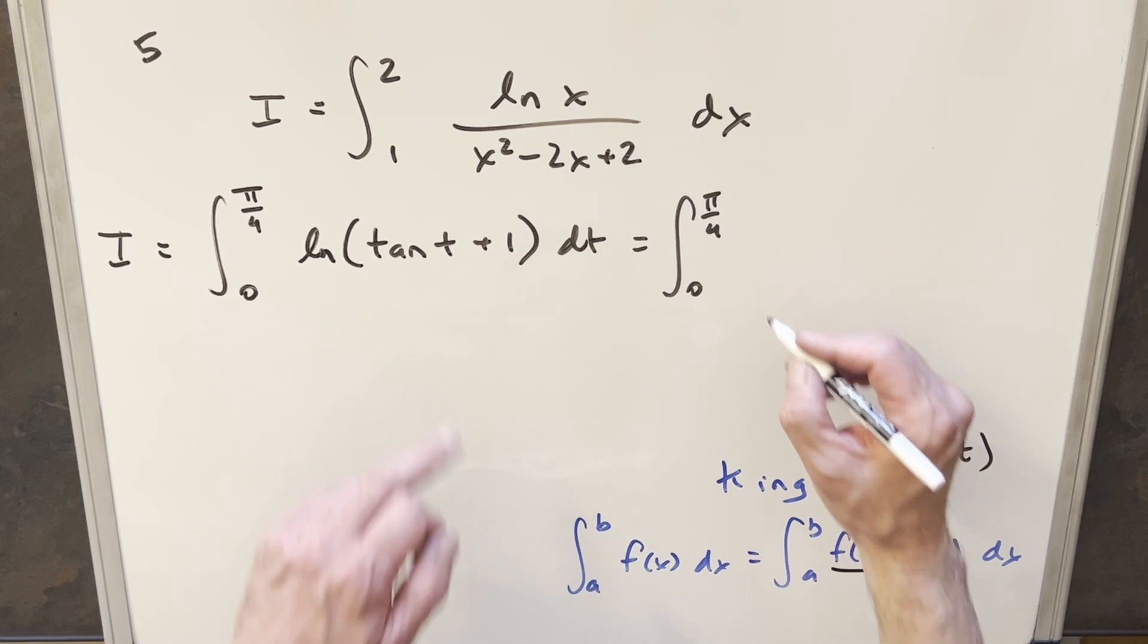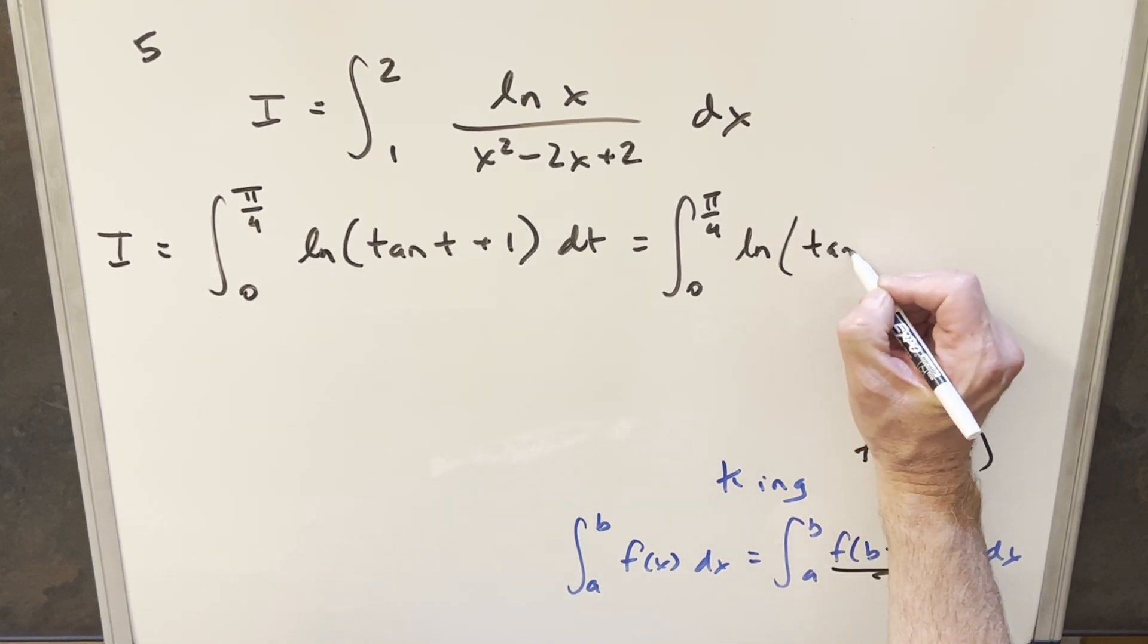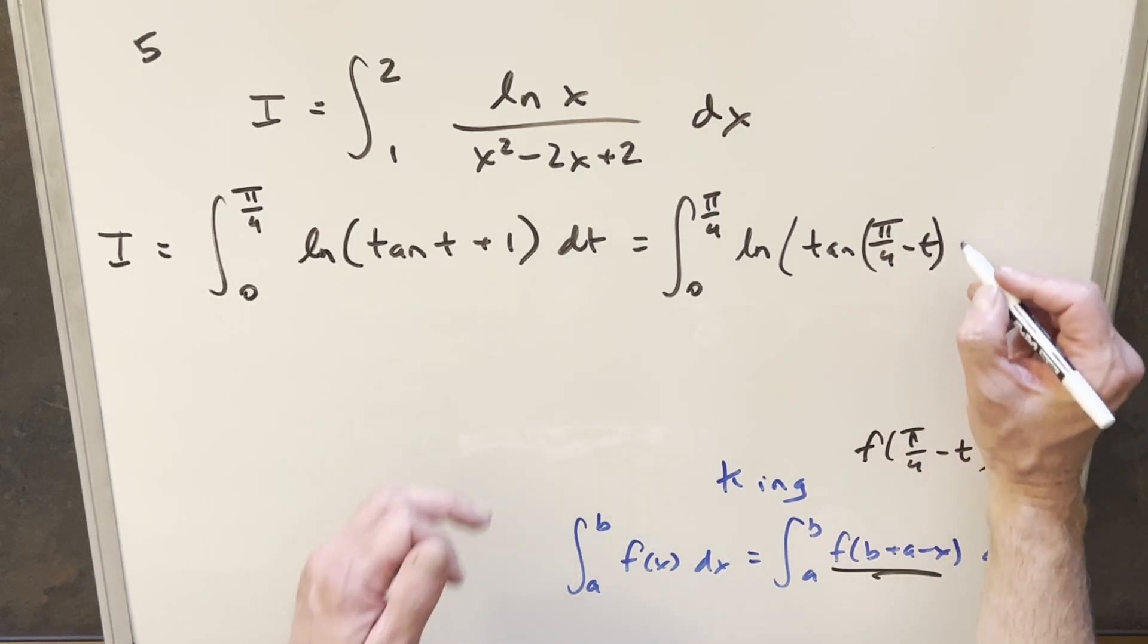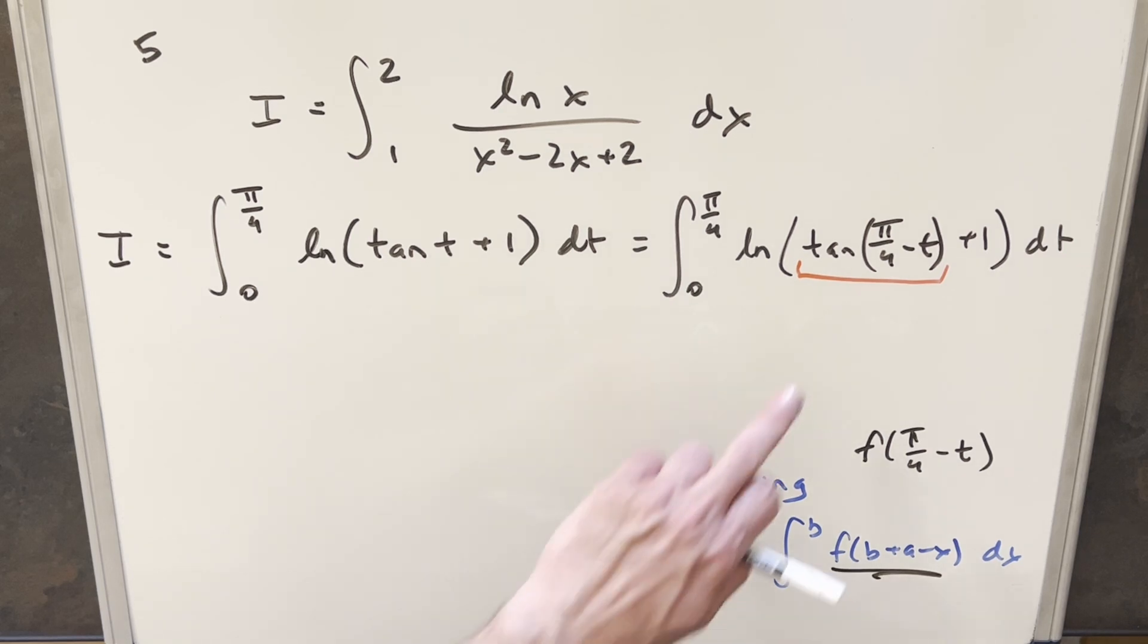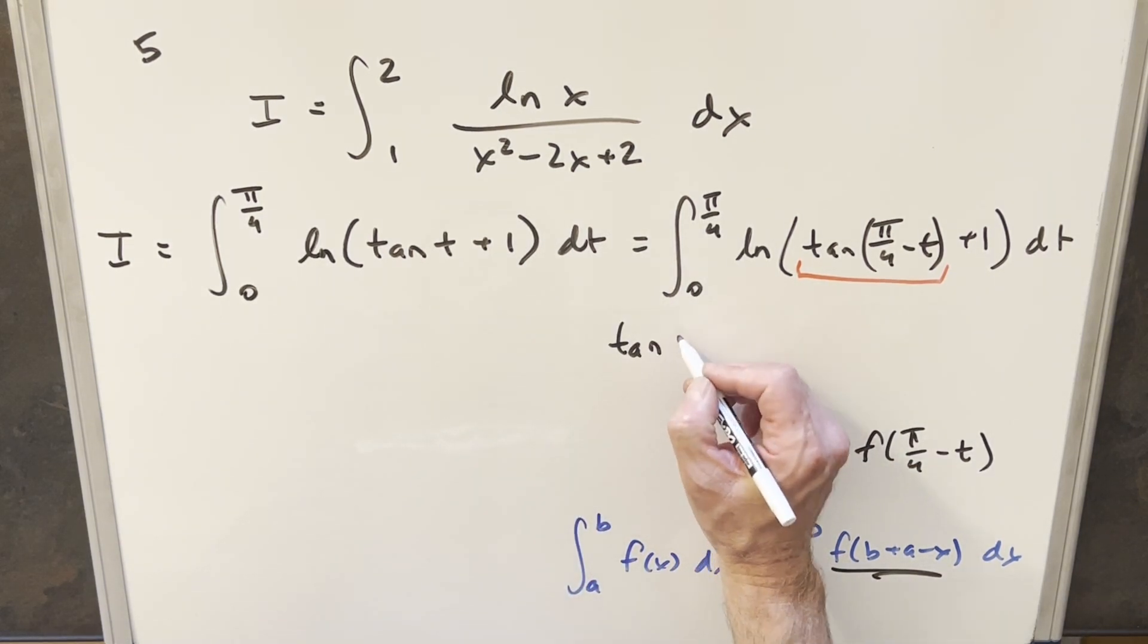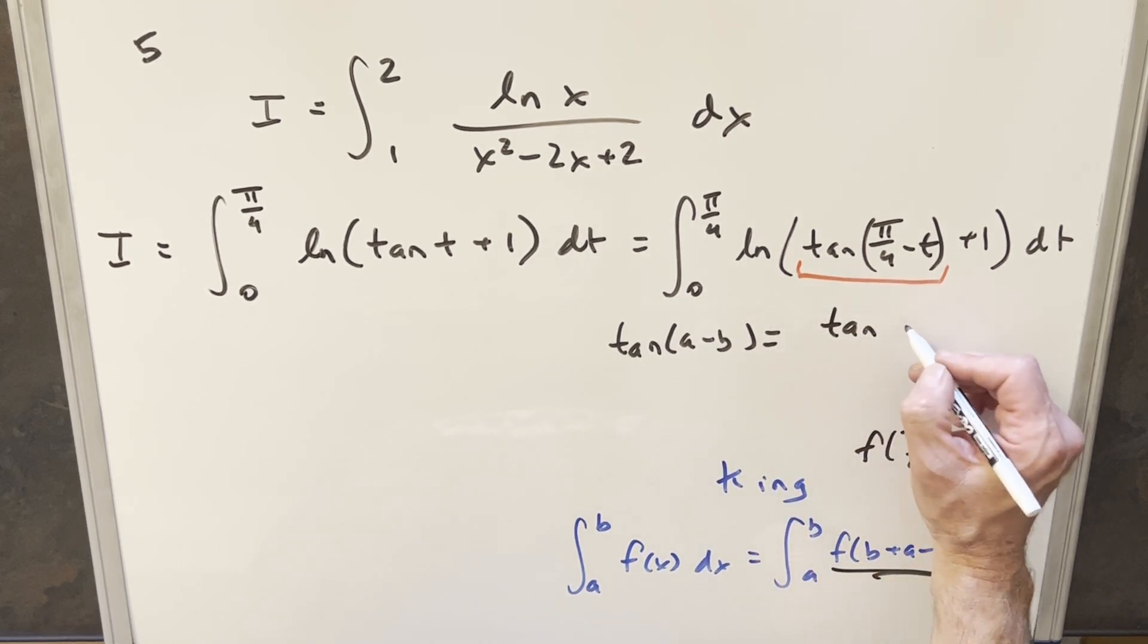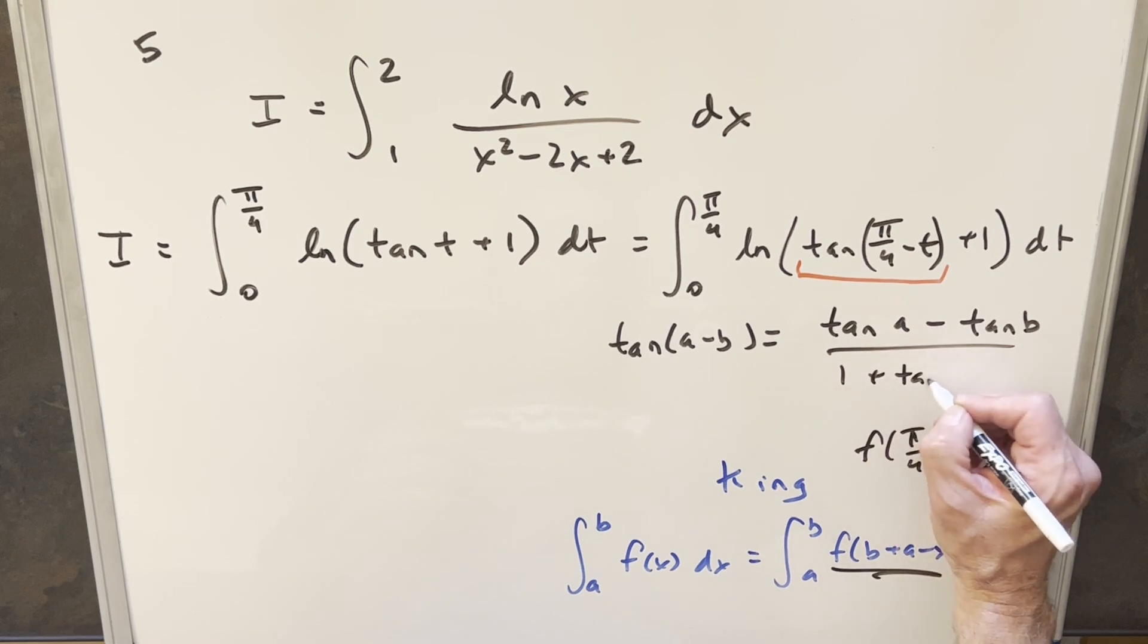So when we input that here, inputting into the tangent, this is going to become natural log tan pi over 4 minus t. Then we still have this plus 1 here. But now for this right here, what we can do is use the difference angle formula for tangent. I find this one can be a little hard to remember, because I always forget what the signs should be.